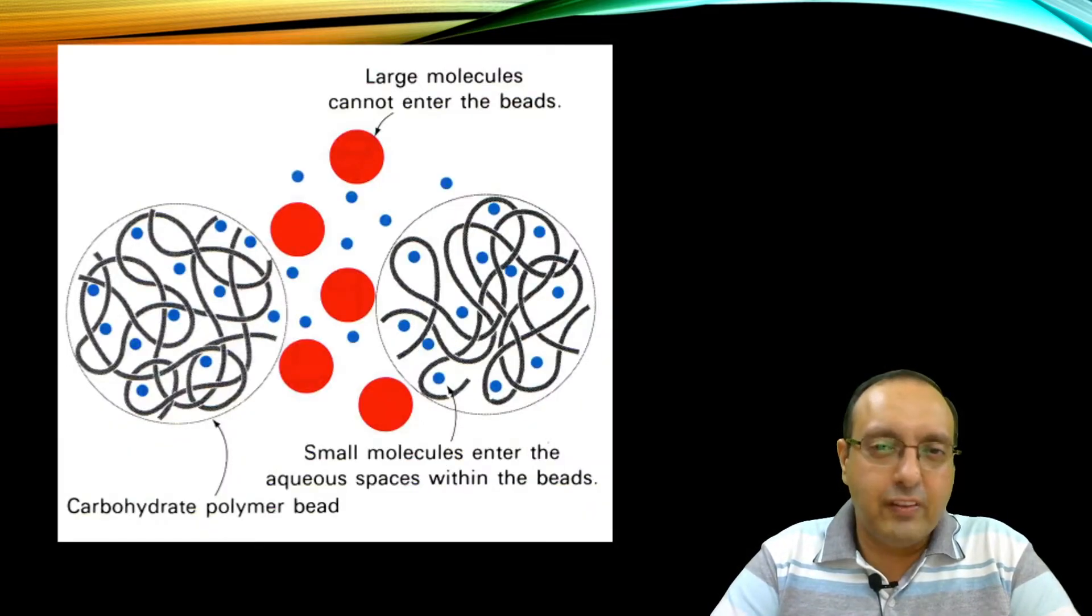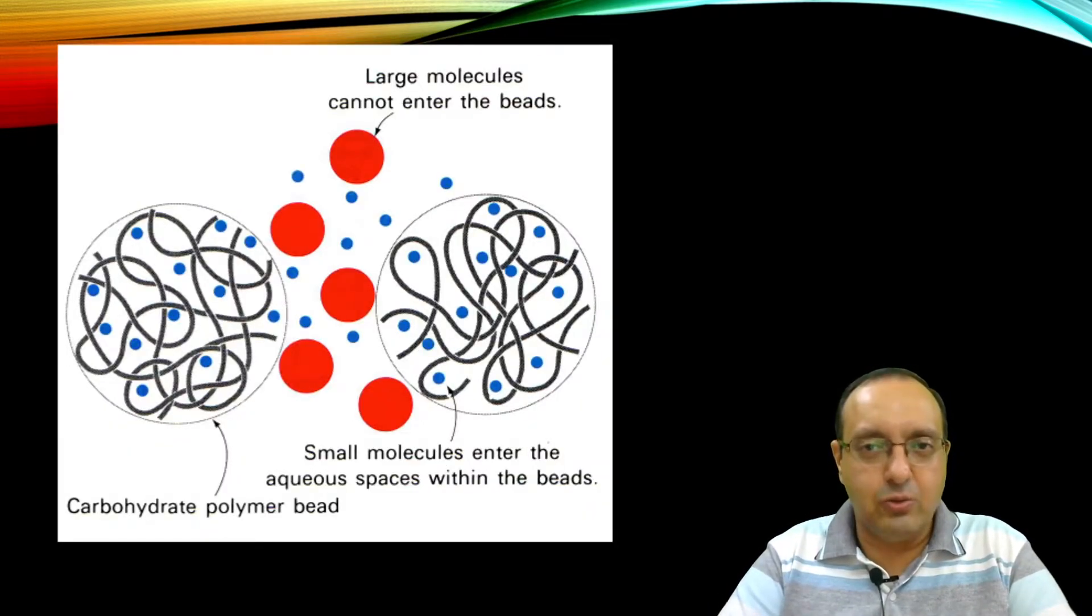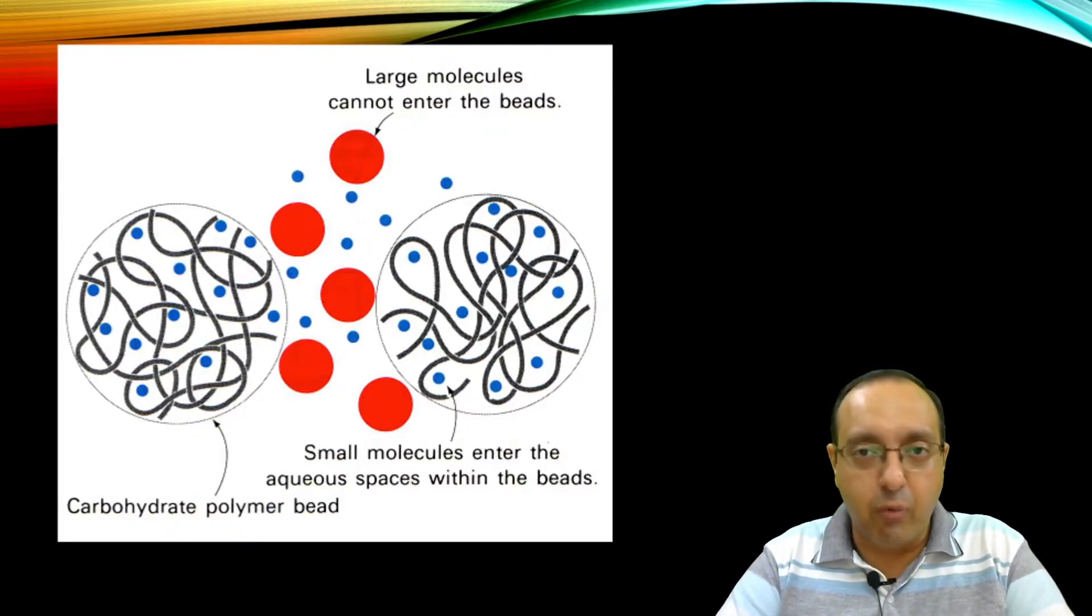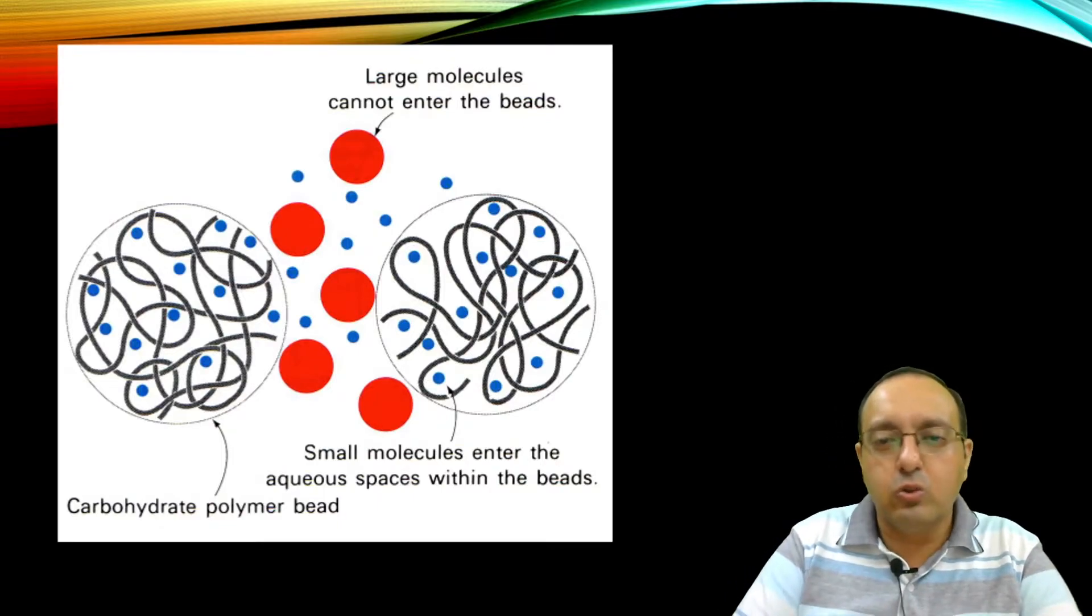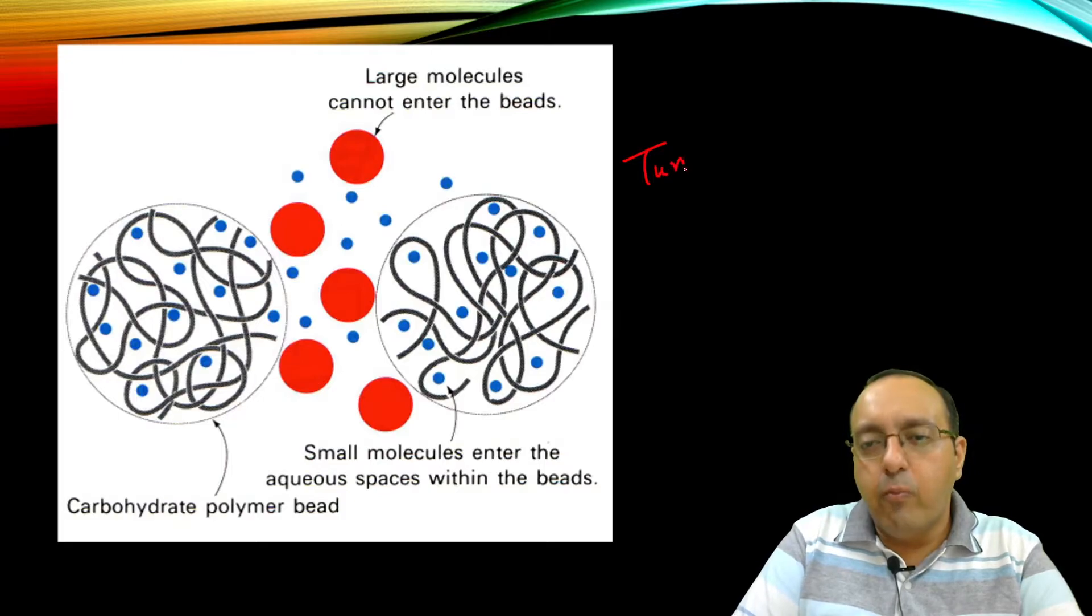Size exclusion chromatography is a simple technology to understand. It's based on these beads made of carbohydrate polymers with small pores in them, also called tunnels or pores. These are of specific sizes. Using chemical technologies, we can make pores of certain sizes in these beads.